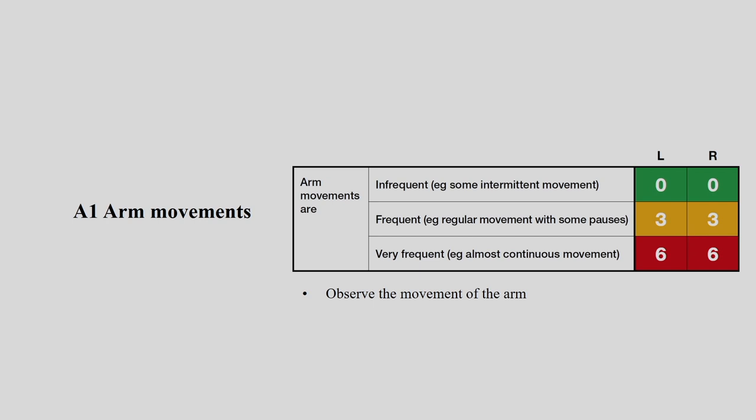Arm movement (A1) is categorized into three areas for both left and right hand: infrequent or intermittent movement scores 0 (green); frequent regular movement with some pauses scores 3 (amber); and very frequent, almost continuous movement scores 6 (red). Observe the movement of the arm for a particular shift and assign the corresponding scoring value.